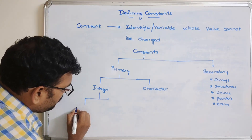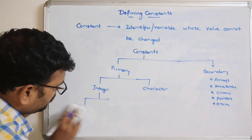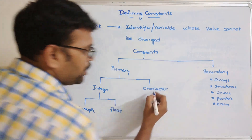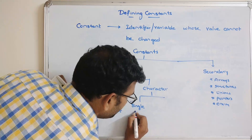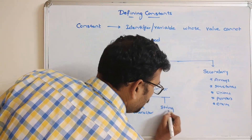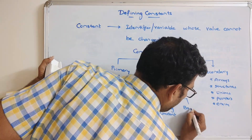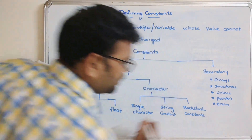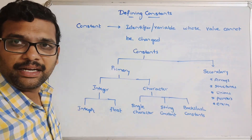Primary constants include integer constants, float constants, character constants — specifically single character constants — and string constants.